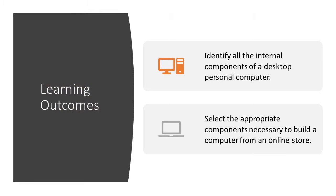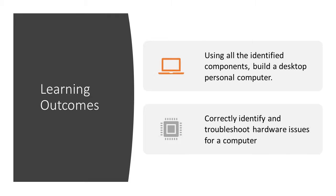The learning outcomes for this particular unit are as follows. Number one, identify all the internal components of a desktop personal computer. Number two, select the appropriate components necessary to build a computer from an online store. Number three, using all the identified components, build a desktop personal computer.